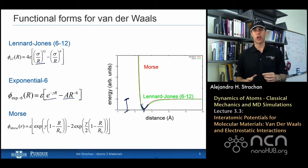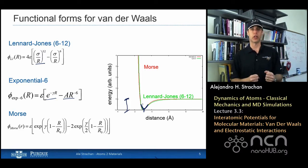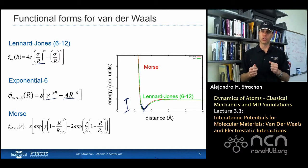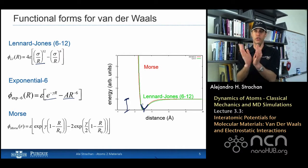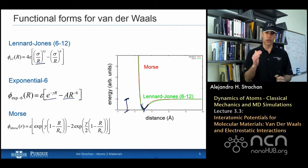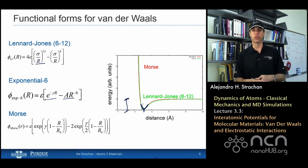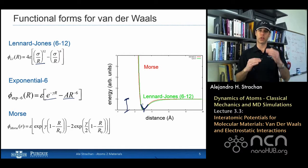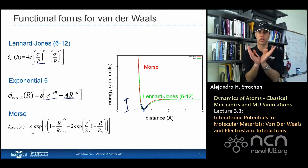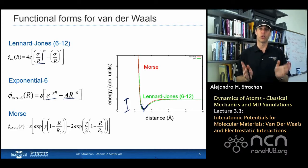In Lennard-Jones there's only two free parameters, so these three quantities cannot be independently adjusted. So in Lennard-Jones you give an energy scale and a distance scale, and the curvature is automatically given. In exponential 6 of Rydberg and in Morse you have three parameters, so you can independently pick your equilibrium distance, well depth or bonding depth, and the curvature at the bottom. Alright, so those are van der Waals interactions.